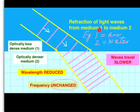Refraction or bending of light waves from medium 1 to medium 2. Medium 1, for example, could be air. Medium 2 is water, say.